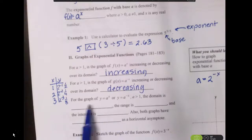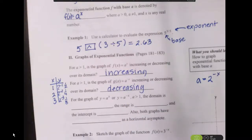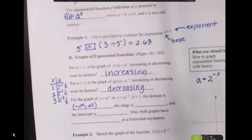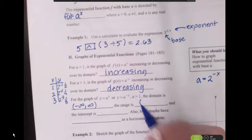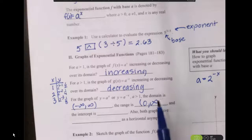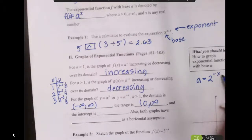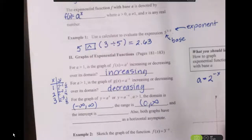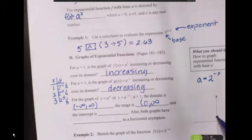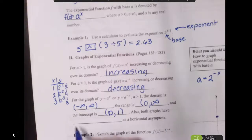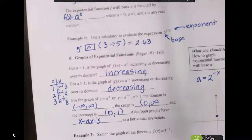For the graphs of y = a^x or y = a^(-x) with a > 1: the domain is all real numbers, and the range is (0, ∞). For the y-intercept, when x = 0, any number a^0 = 1, so no matter what your a value is, the graph always passes through (0, 1). Both curves share the x-axis as a horizontal asymptote.